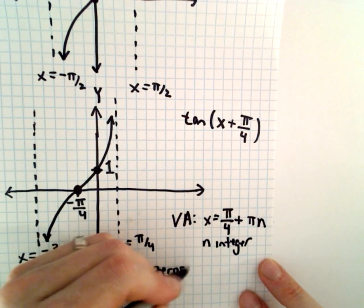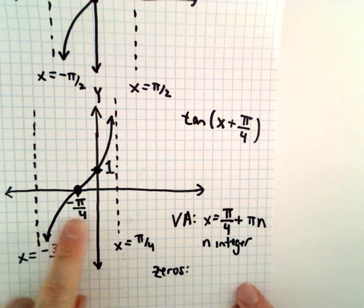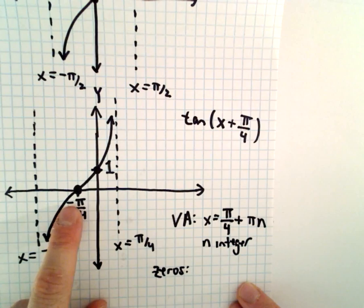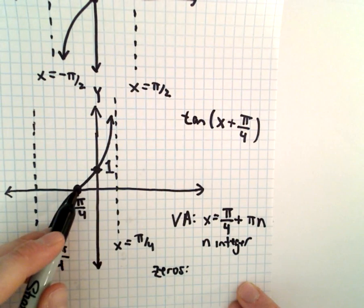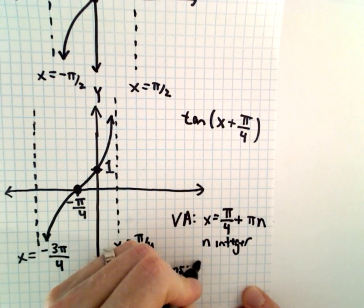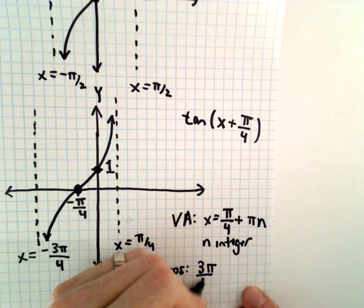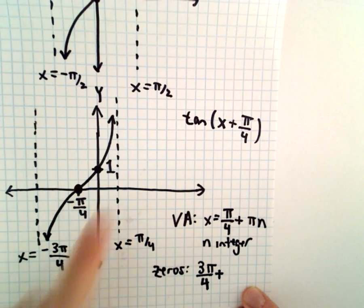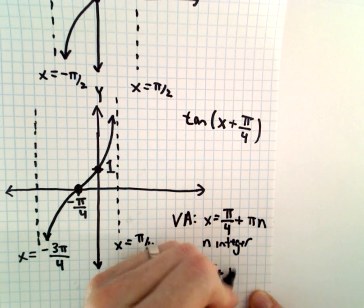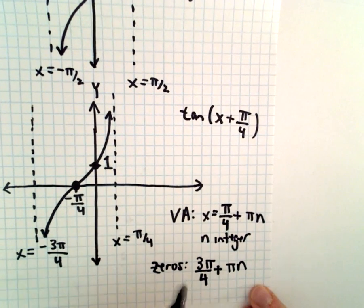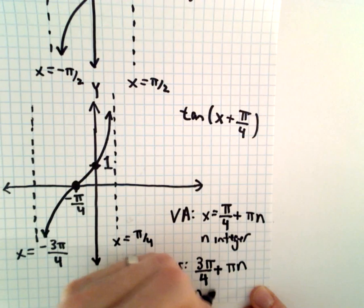The zeros, we've got a zero at negative pi over 4. If we add pi to that, you would be at 3 pi over 4. And to get to another zero, we would simply have to add a multiple of pi. So I'm going to write the zeros as 3 pi over 4 plus pi n, where n is an integer.